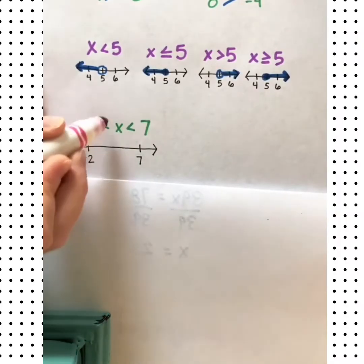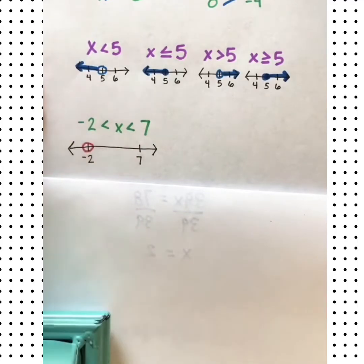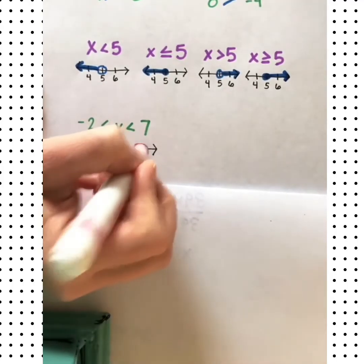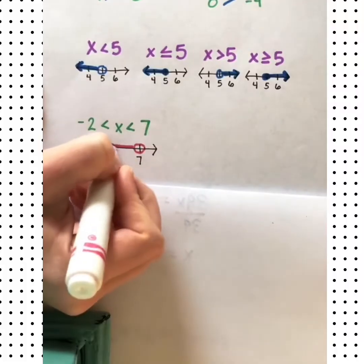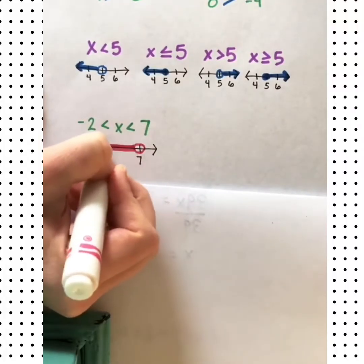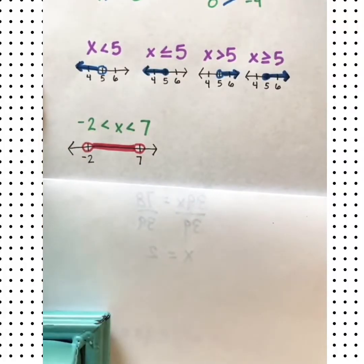On a number line, because we don't have an equal there, we're going to do open circles. And x can be any value here in between those two numbers, so we'll shade in between.